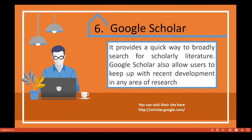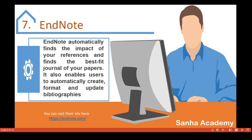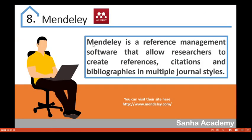The next tool is Nnaught, one of the best tools available for researchers. Nnaught automatically finds the impact of your references and identifies the best journal for your papers. It also enables users to automatically create, format, and update bibliographies. You can use it to gather all your articles in one place and create bibliographies easily.